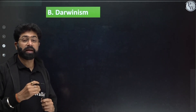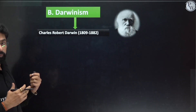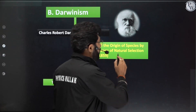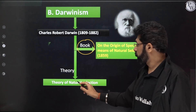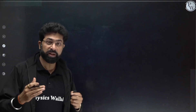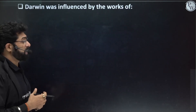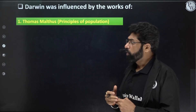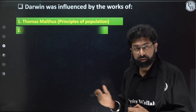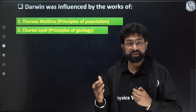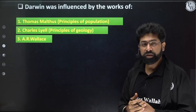Two key concepts Darwin gave were: branching descent and natural selection. The postulates of his Theory of Natural Selection were: overproduction leading to overpopulation; struggle for existence; variations and heredity; natural selection or survival of the fittest; and finally, origin of new species. These postulates follow a sequence: overpopulation leads to struggle for existence; fitter individuals survive and produce more progeny, potentially leading to a new species.